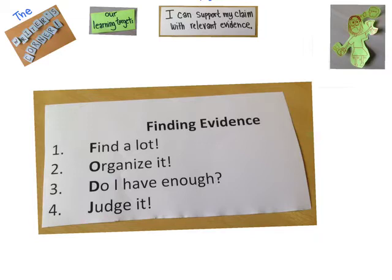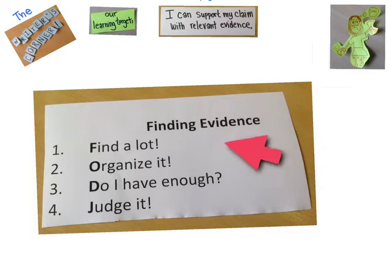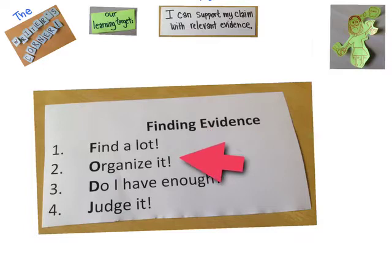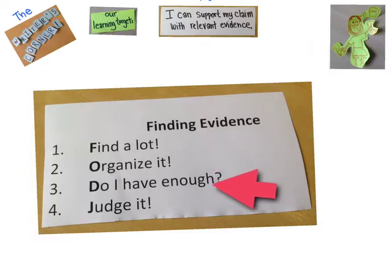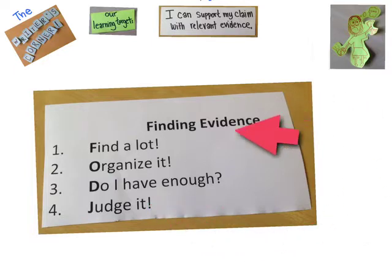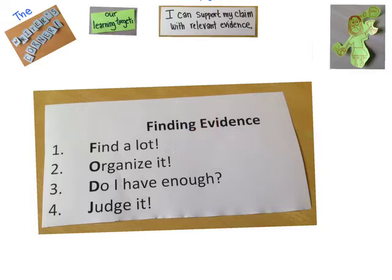We're going to help Carol by starting off with finding some evidence for her paper — one of the most important steps to make sure you have a good evidence-based paper. The first step to finding evidence is to look for it and find a lot of it. The next step is to organize the evidence. Then you want to check that you have enough good evidence. Finally, you want to judge it to make sure it's appropriate. You can remind yourself of these steps by thinking FODGE.